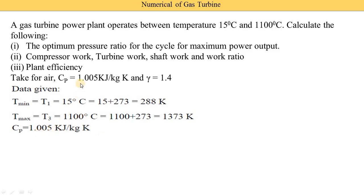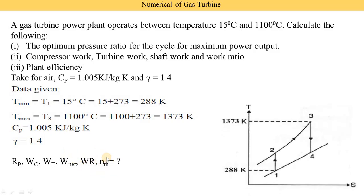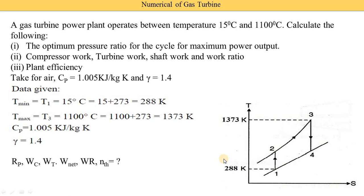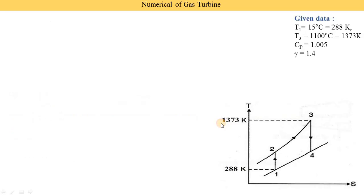CP of air is given as 1.005 and gamma is 1.4. We need to calculate: pressure ratio RP, compressor work WC, turbine work WT, net work (shaft work), work ratio, and plant efficiency. We also draw the TS diagram in examinations when this numerical is asked, indicating temperatures T1 and T3 on the graph. To find the pressure ratio RP, we use the equation: RP = (T3/T1) raised to gamma/(2(gamma−1)).